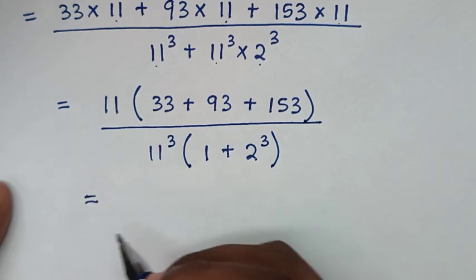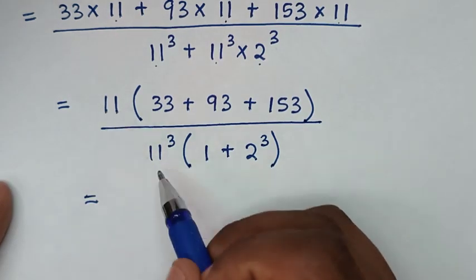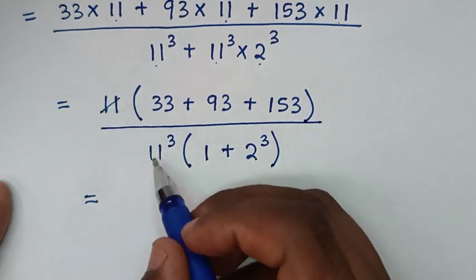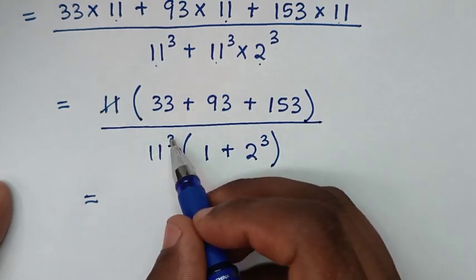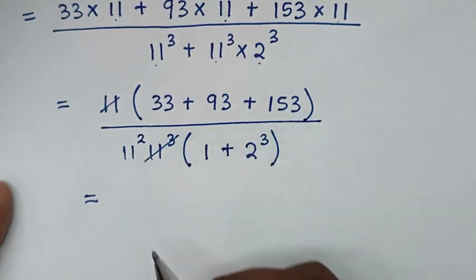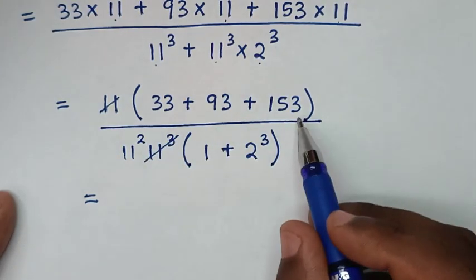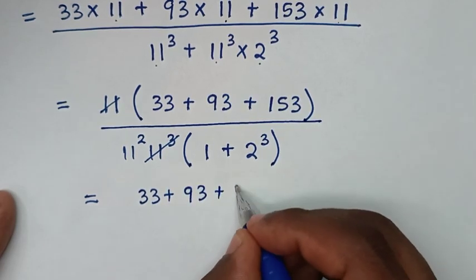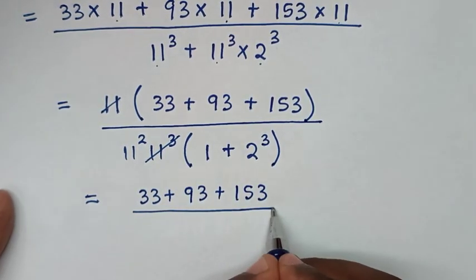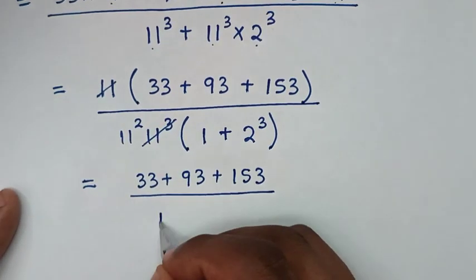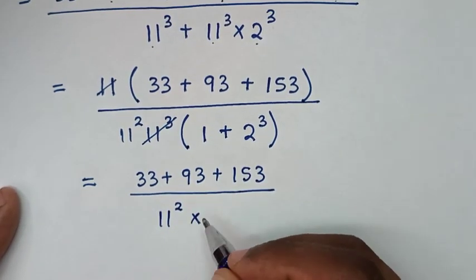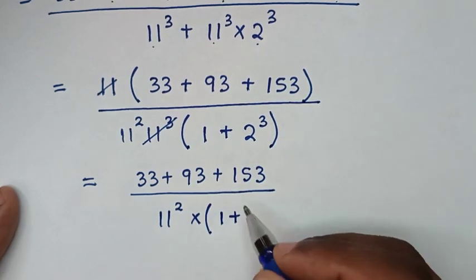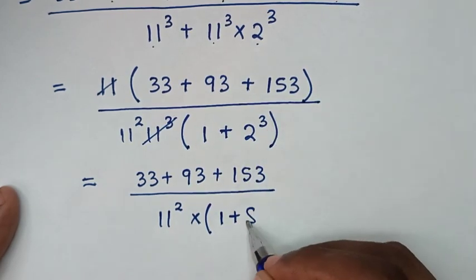Then it will be equal to — we simplify. 11 divided by 11 power 3 gives 11 power 2 in the denominator. So in the numerator it will be 33 plus 93 plus 153, over 11 power 2, times the bracket 1 plus 2 power 3, which is 1 plus 8 equals 9.